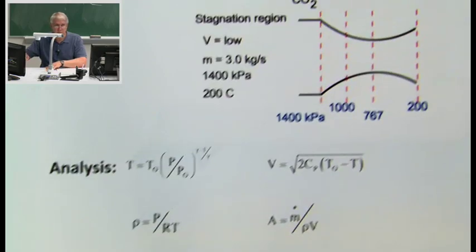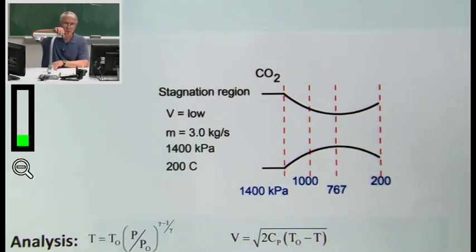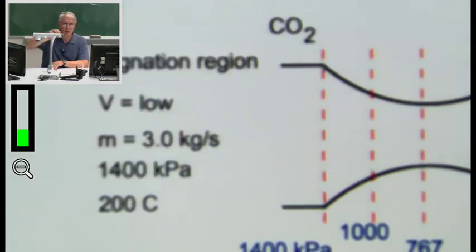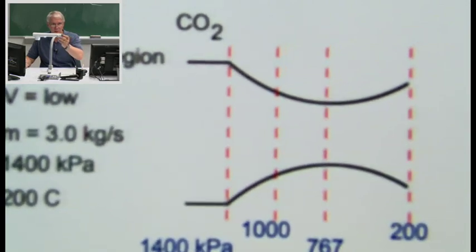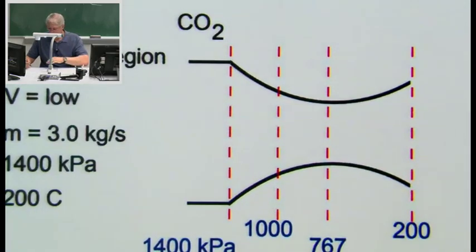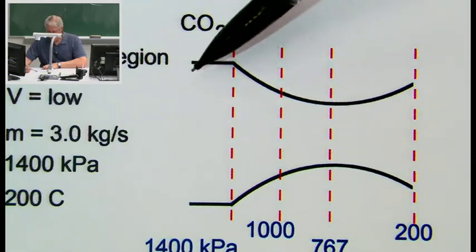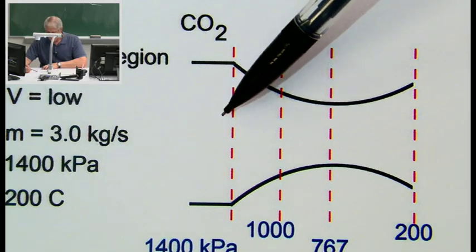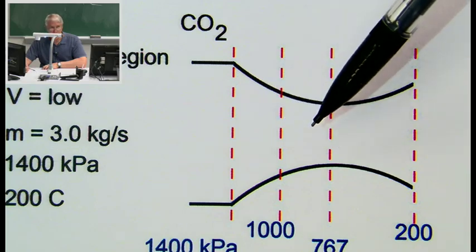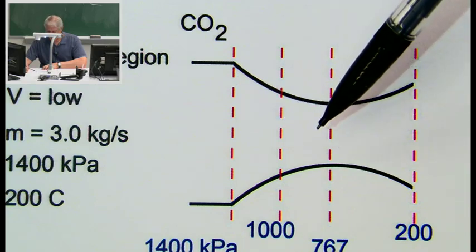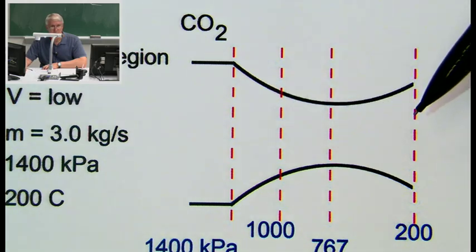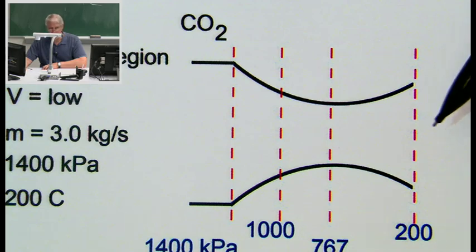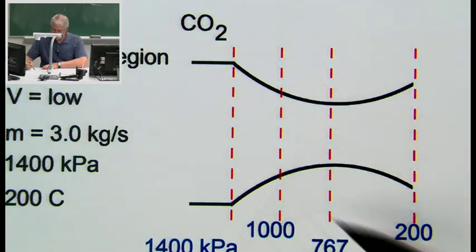Now, what we're normally used to in everyday life: if the area of the duct decreases, we normally see the velocity increase and the pressure go down. As the area increases, we see the velocity decrease. That's what we're used to seeing. But we've done this experiment and made these measurements — let's see what results we get.